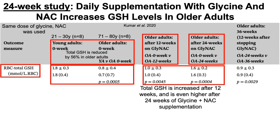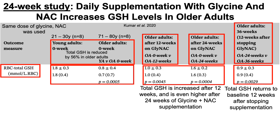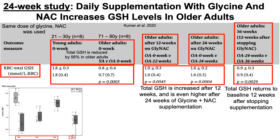If supplementation is driving the effect, removing it should cause a reversion to baseline. Looking at data 12 weeks after stopping supplementation, glutathione levels fell back to approximately baseline at 0.9. The graph clearly shows red blood cell glutathione rising significantly at 12 and 24 weeks of supplementation, then declining back toward baseline after supplementation stopped at week 36.